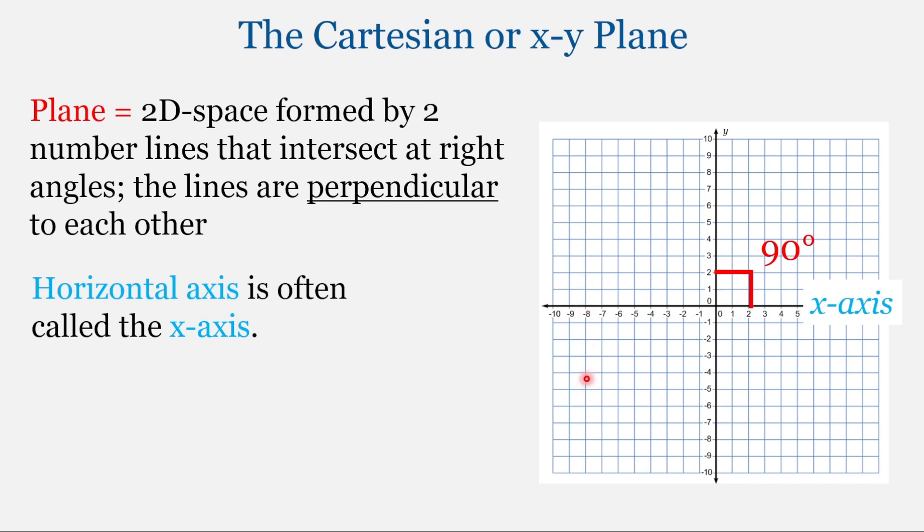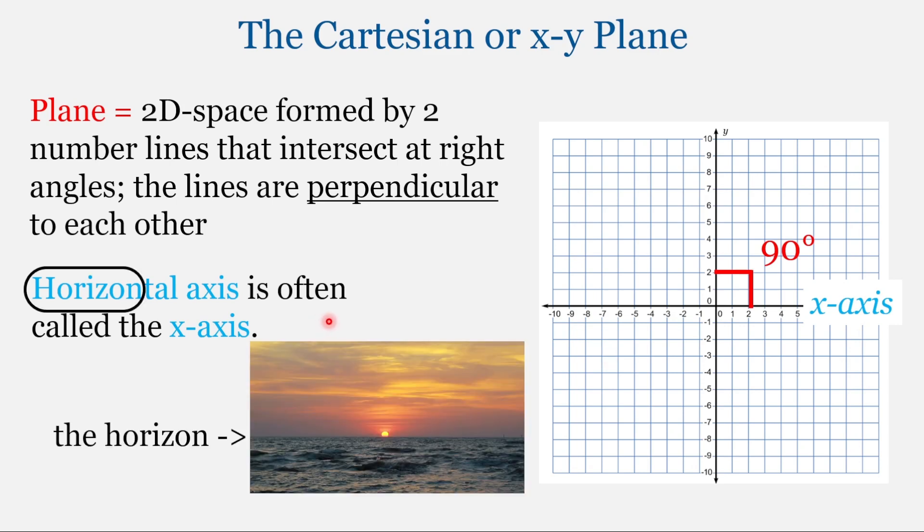As opposed to up, down, up, down. Now one way to remember the direction of the horizontal axis is to think of the horizon. And the horizontal axis starts with the horizon. And at least on my planet, the horizon goes from right to left, left to right, not up and down.